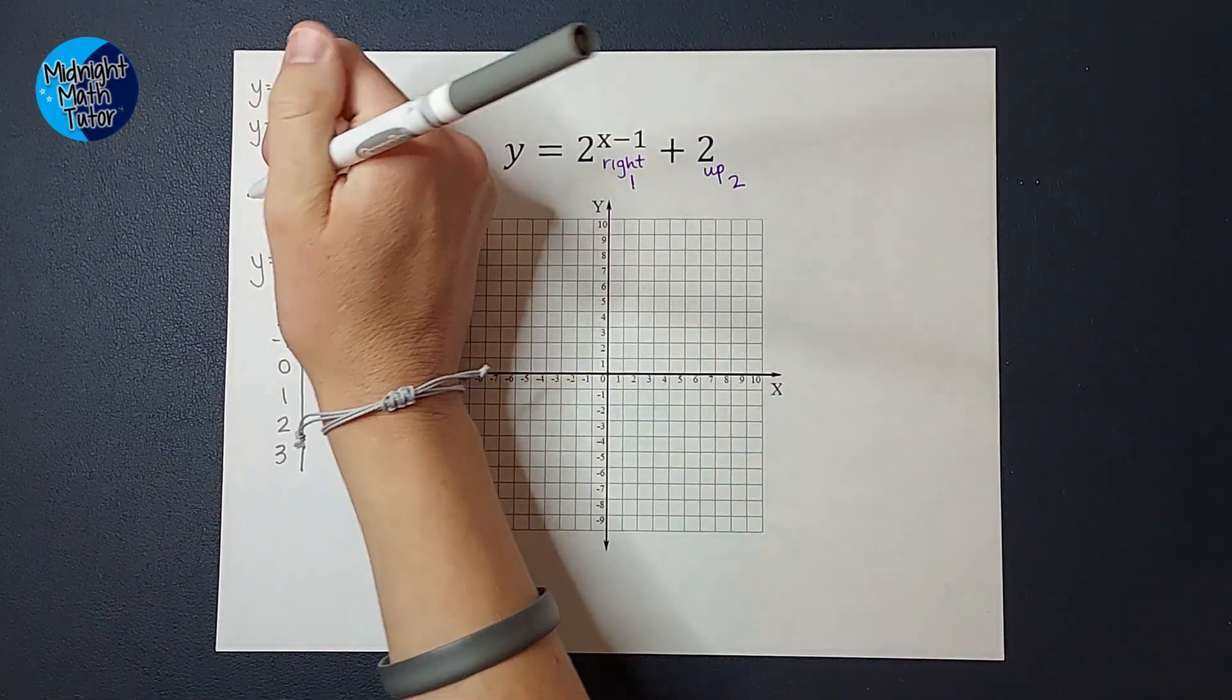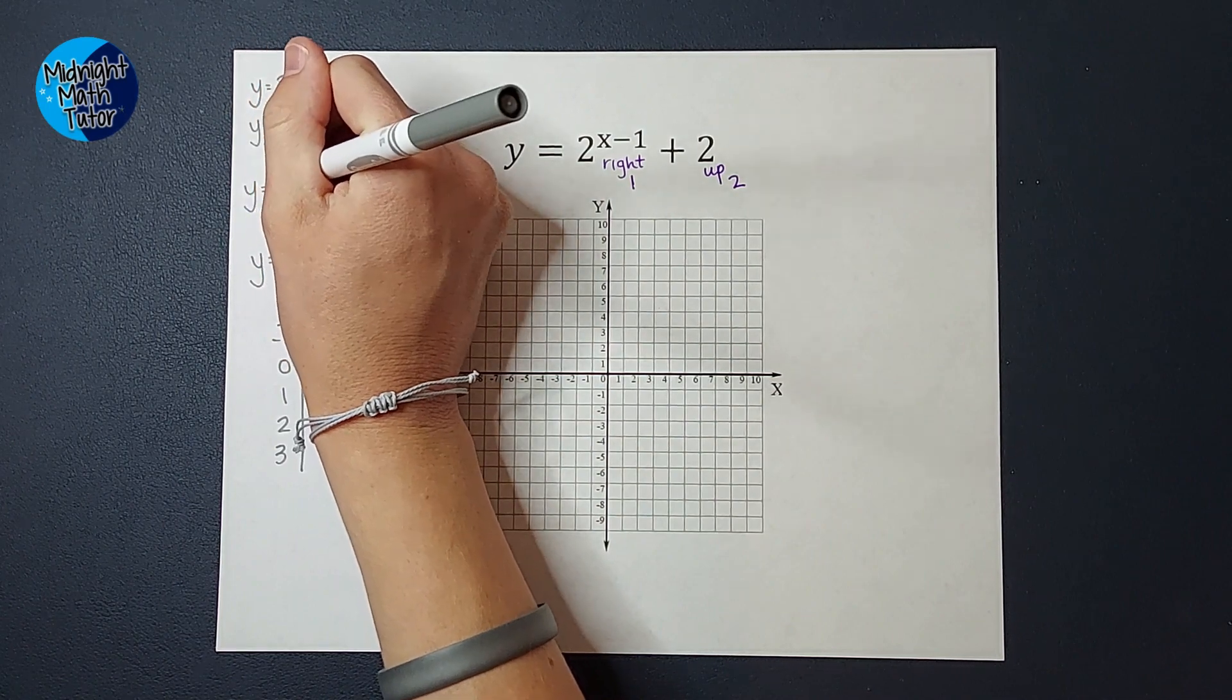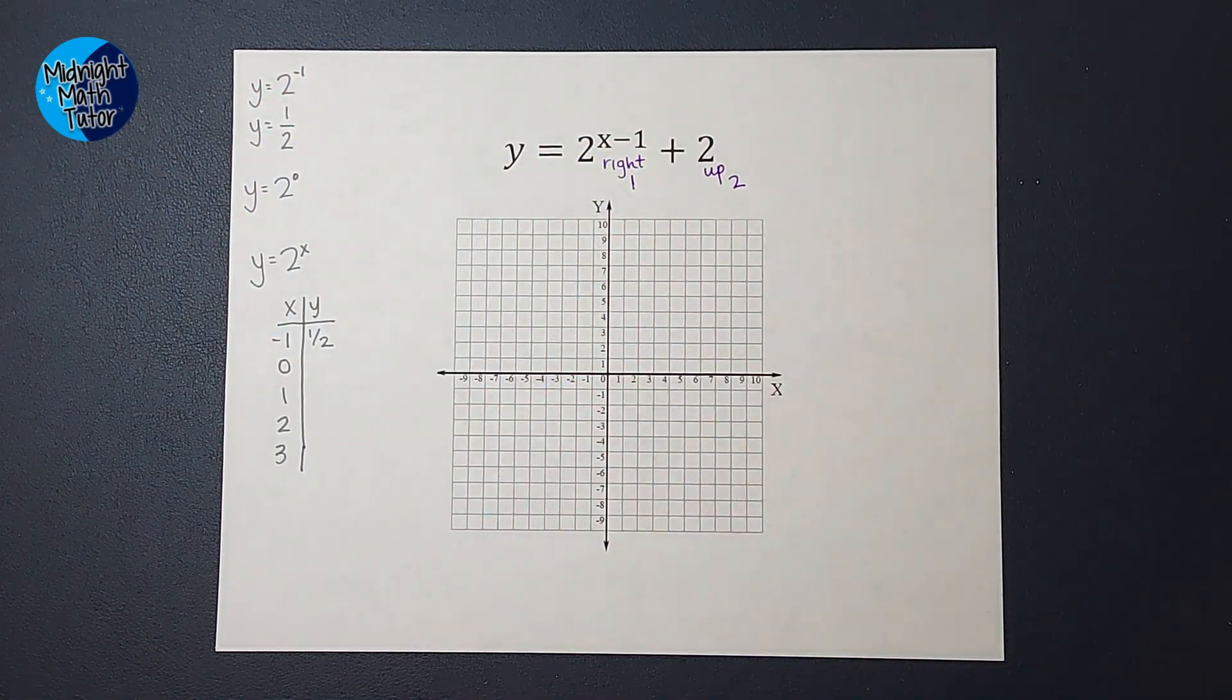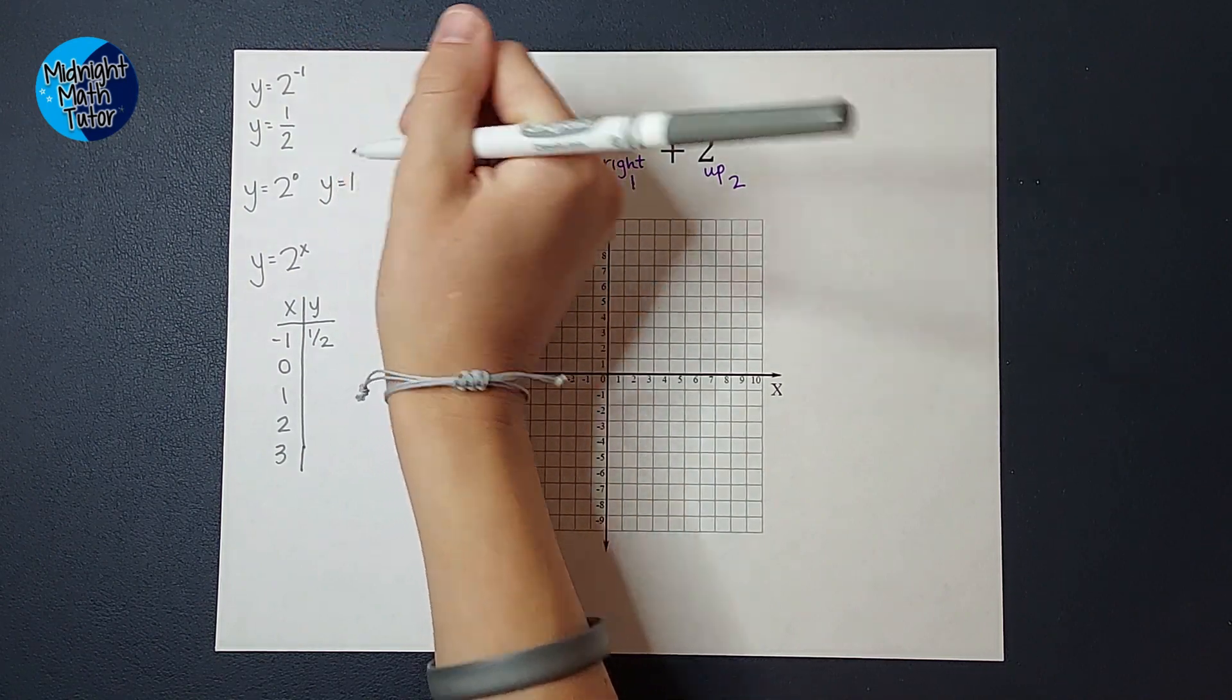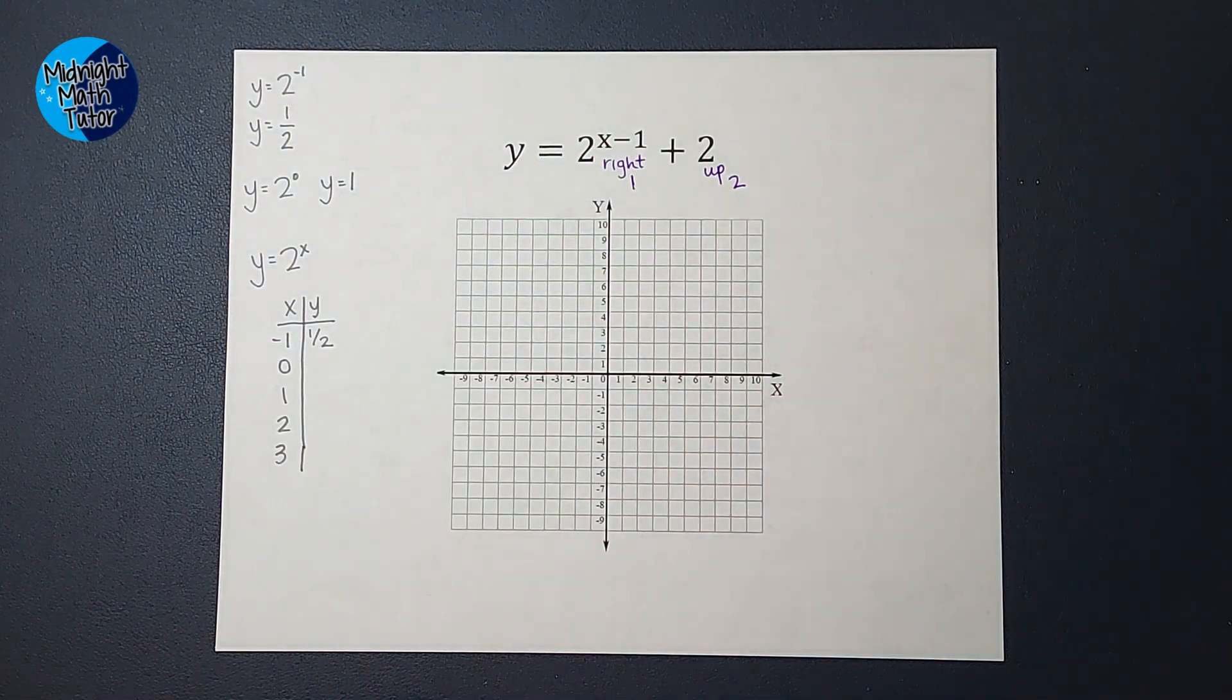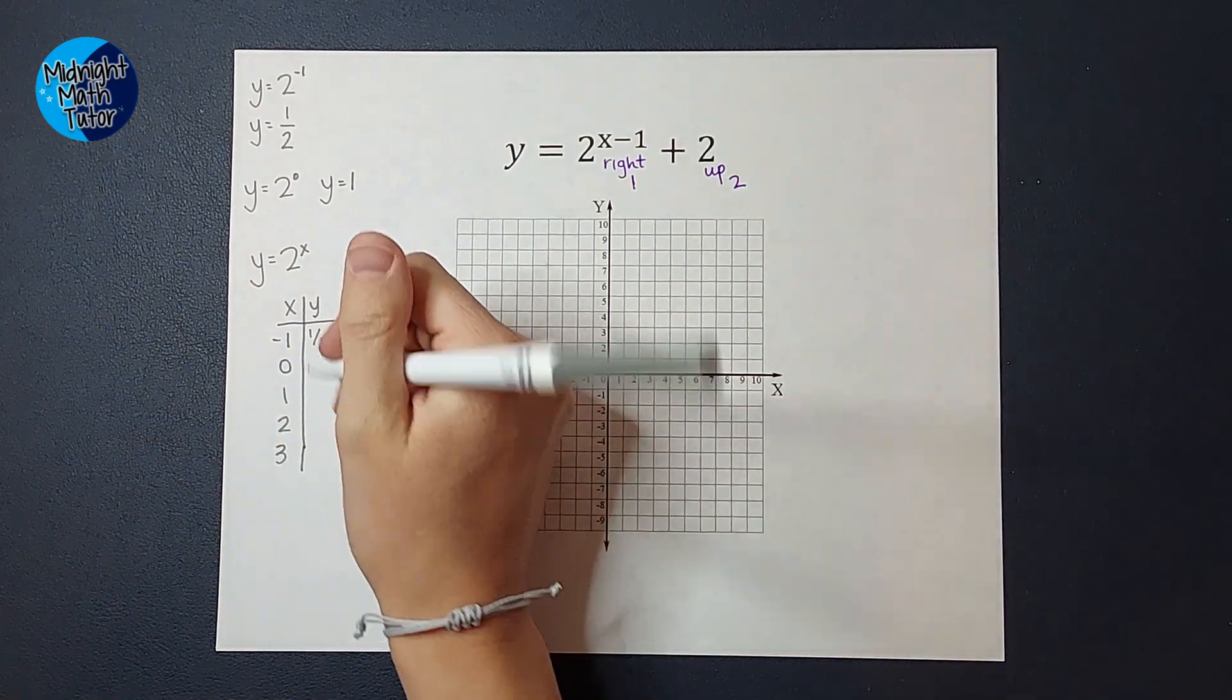When I plug in 0 for x, I get 2 to the power of 0. Anything to the power of 0 is 1. Again, if you're like, she's crazy, I'll link a video showing you why this works. So when I plugged in 0, I got 1.